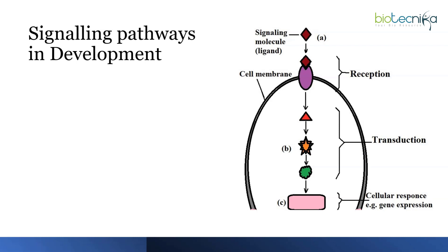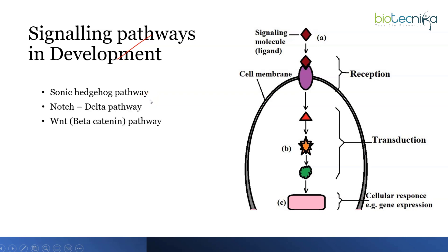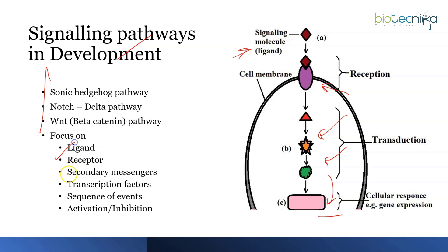Finally, signaling pathways in development are important because many pathways appear across different processes — such as the Sonic Hedgehog pathway, Notch-Delta pathway, and the very important Wnt/beta-catenin pathway. For each pathway, focus on the ligand name, receptor name, secondary messengers, transcription factors, and the outcomes of activation and inhibition. This topic also connects with Unit 4, so ensure you know the signaling pathways in development alongside the others. That's all — I hope this video was helpful. Do let me know in the comments!